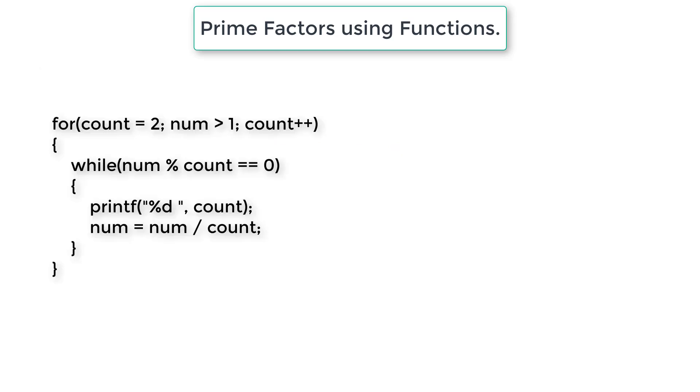Observe here, count started from 2 which is smallest prime number. But we are incrementing count value by 1 for each iteration of this for loop. So that is natural numbers from 2.